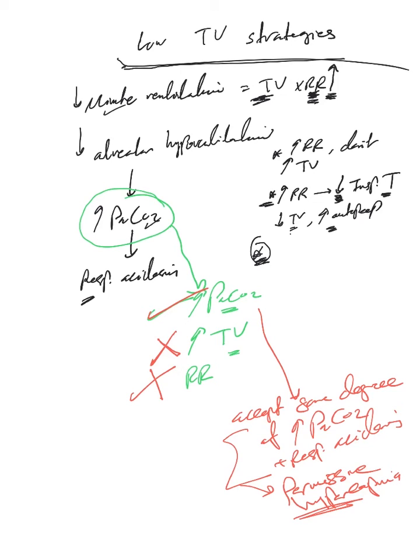Remember, if you want to play with minute ventilation, keep the tidal volume at 6 to 8 mL per kg and 6 or less in ARDS, and play with the respiratory rate to a certain limit. After that, leave it alone and accept the hypercapnia. This is what we call permissive hypercapnia.